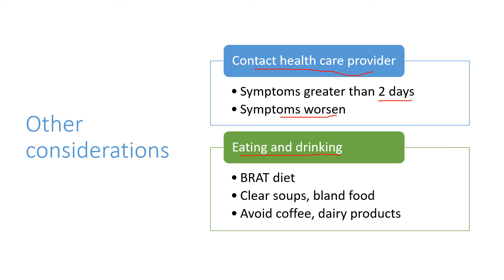Also, regarding eating and drinking — once we're feeling up to it, we want to eat and drink to replenish the fluids and electrolytes that have been lost due to diarrhea. They often recommend what's called the BRAT diet — that's bland food: bananas, rice, apples, toast, clear soups — anything that won't irritate the digestive tract too much but can help give you energy.